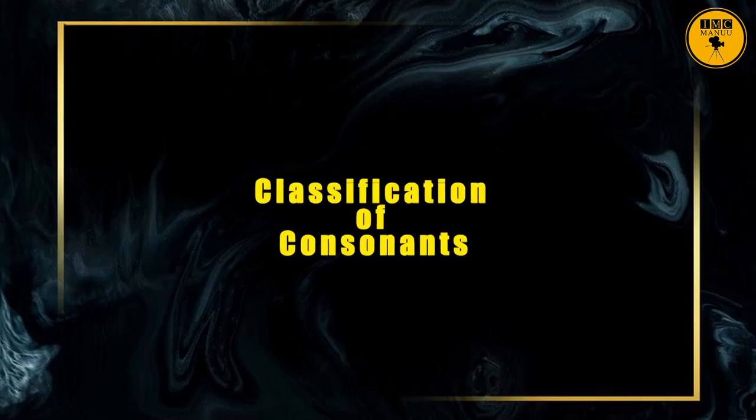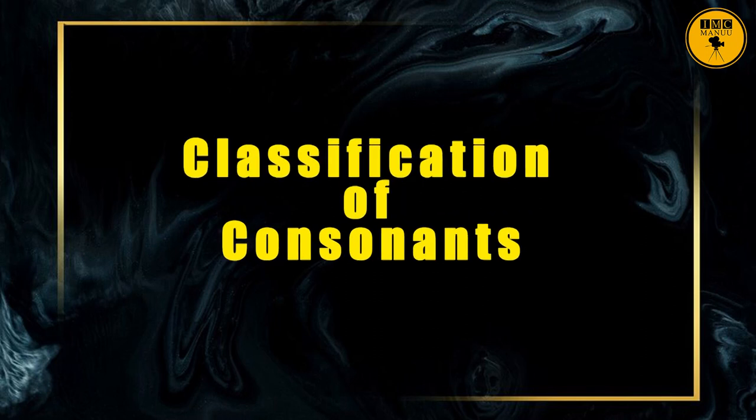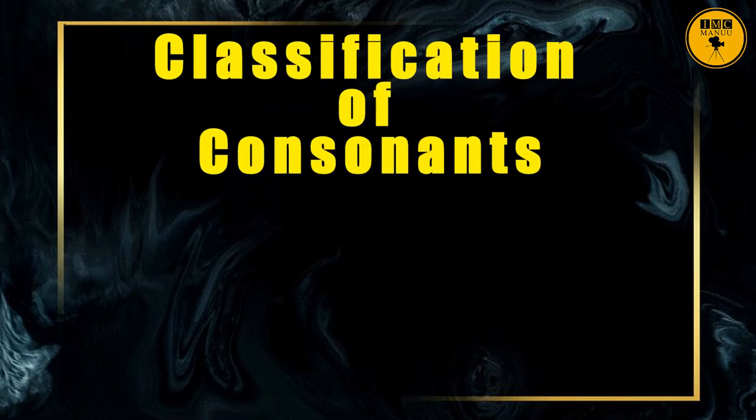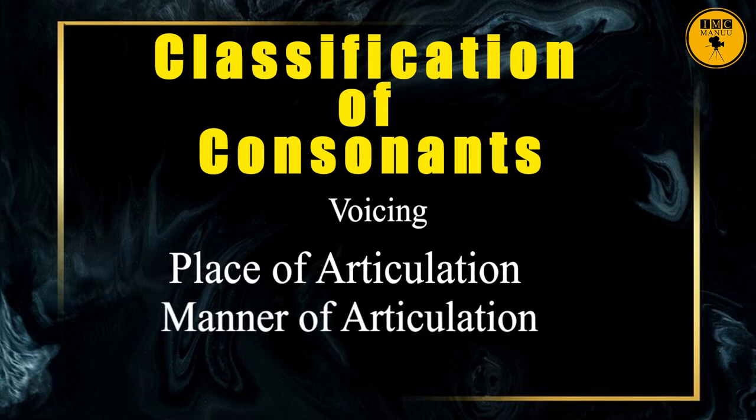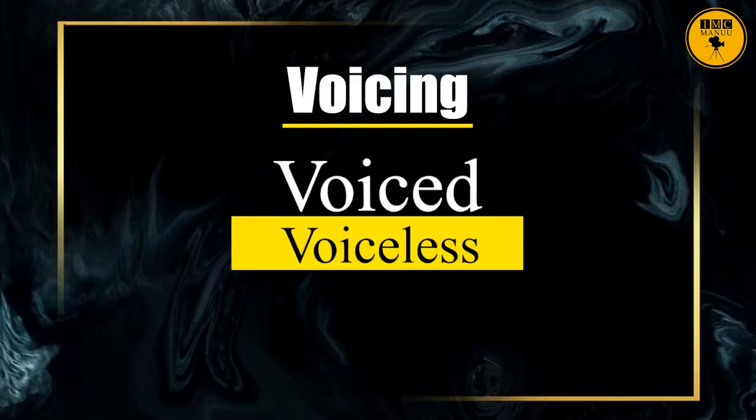Let us look at the classification of consonants. The classification can be divided into three major parts: voicing, place of articulation, and manner of articulation. Under voicing, we have two subheads: voiced and voiceless. When I say voiced or voiceless, I am referring to voiced consonants or voiceless consonants.